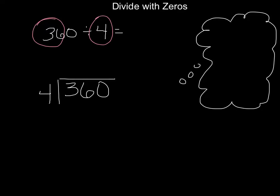Keeping that in mind, I'm going to take a place value approach, and I'm going to start by looking at how many groups of 4 I can get for 300. Well, I don't think I can do hundreds, because if I had 100 groups of 4, that would be 400, and 360 is less than 400. So my quotient is not going to be in the hundreds place — I'm going to have to work in the tens.